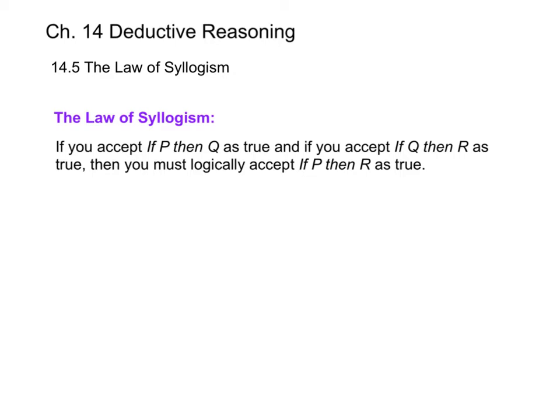We're going to start with the law of syllogism, which says that if you accept if P then Q as true, and if you accept if Q then R as true, you must logically accept if P then R as true.